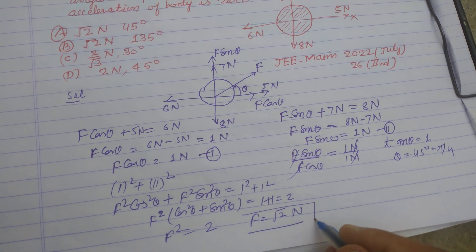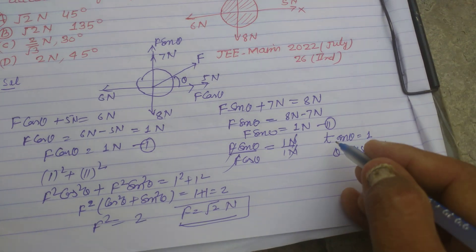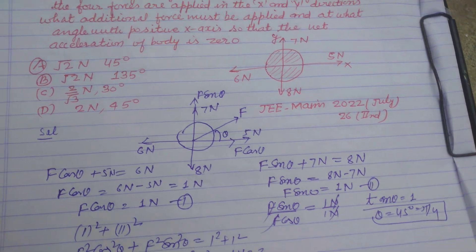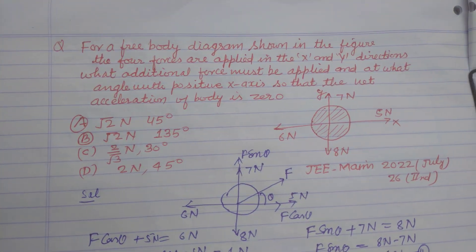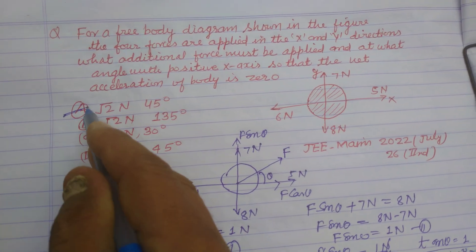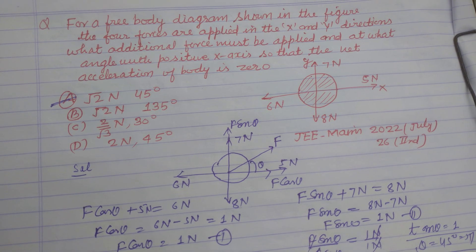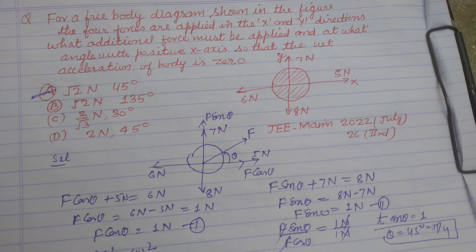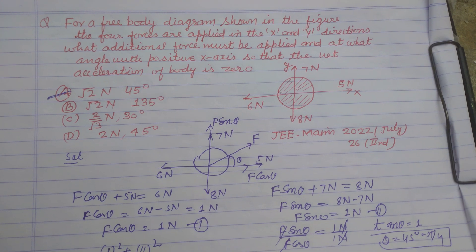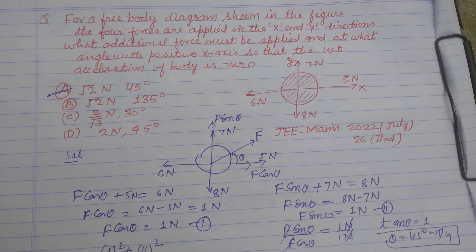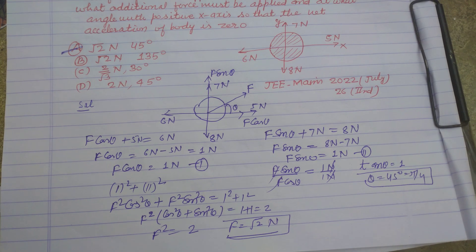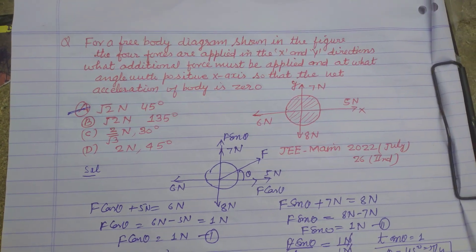So the force is root 2 newton and the angle is 45 degrees or pi by 4. From the given options, the answer is option A: root 2 newton at 45 degrees. Students, in this way we solve this problem. I hope you got it. Please like the video, subscribe the channel, and make comments for any query or doubt. Thanks for watching.